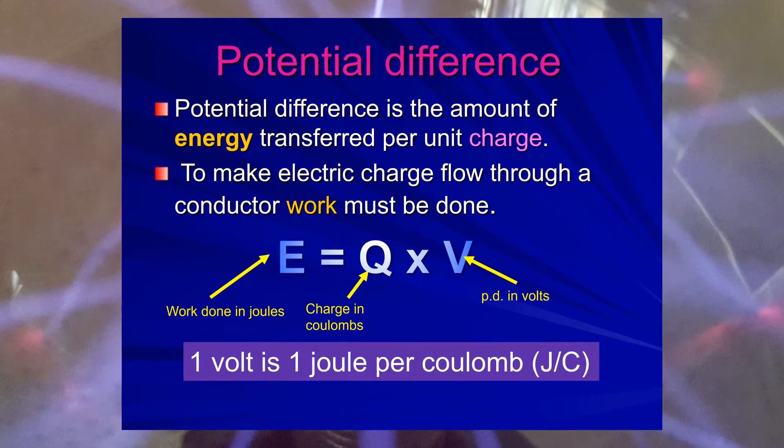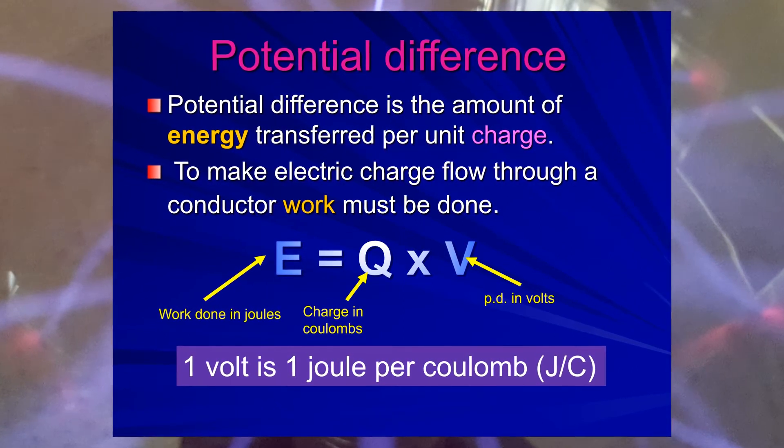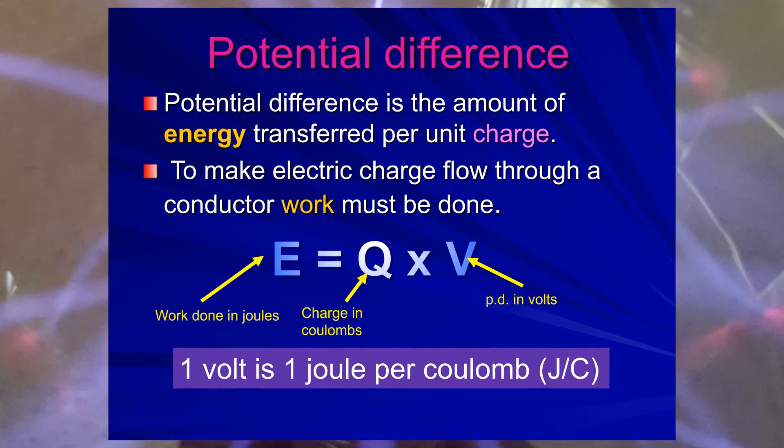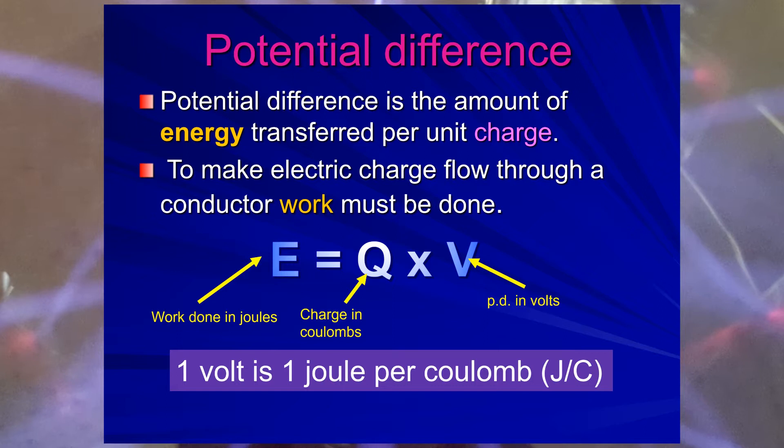So, potential difference, remember, is the posh word for voltage. And really what it means is, as charge moves around the circuit, remember, current is the rate of flow of charge from one of my previous lovely videos, then energy is transferred.